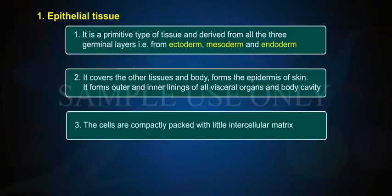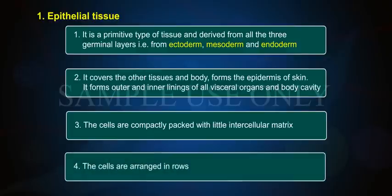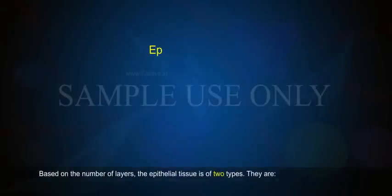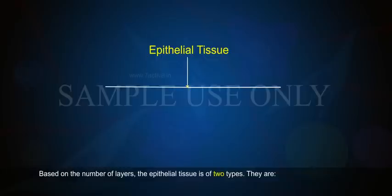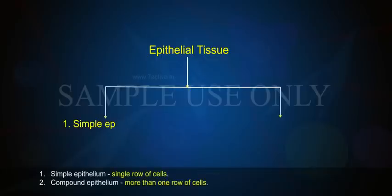The cells are compactly packed with little intercellular matrix. The cells are arranged in rows. Based on the number of layers, epithelial tissue is of two types: 1. Simple epithelium — single row of cells, and 2. Compound epithelium — more than one row of cells.